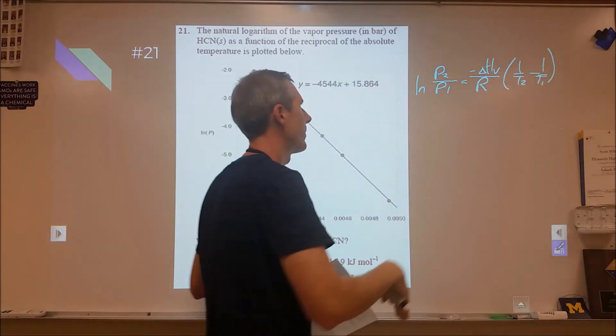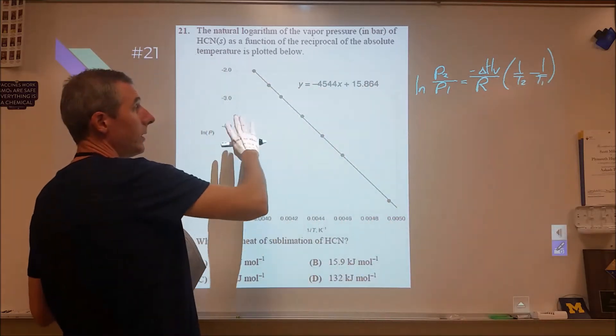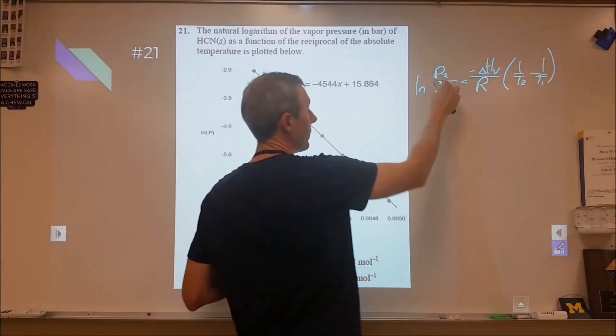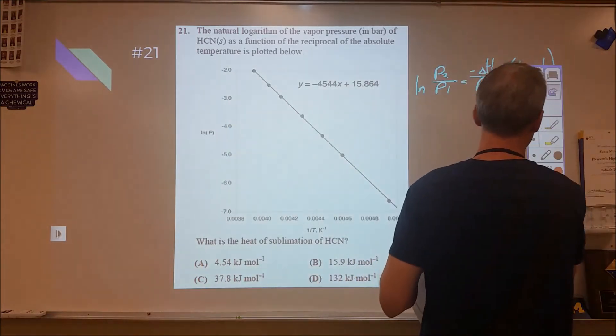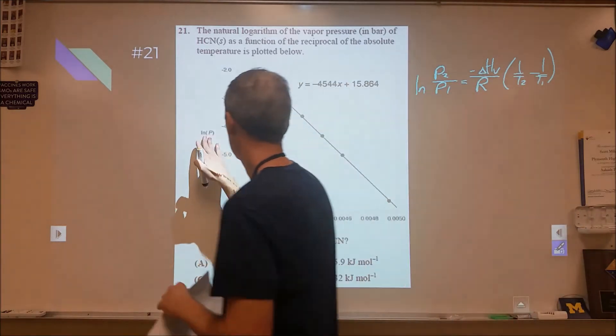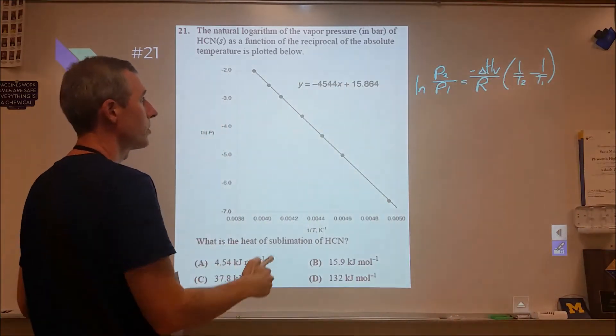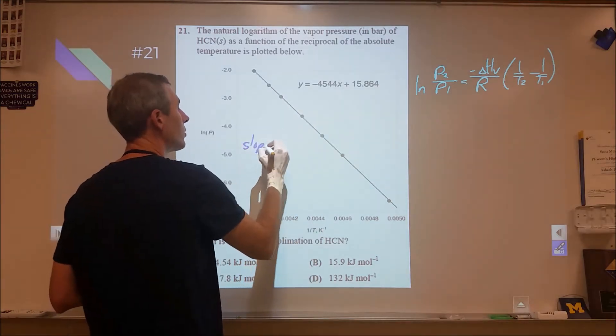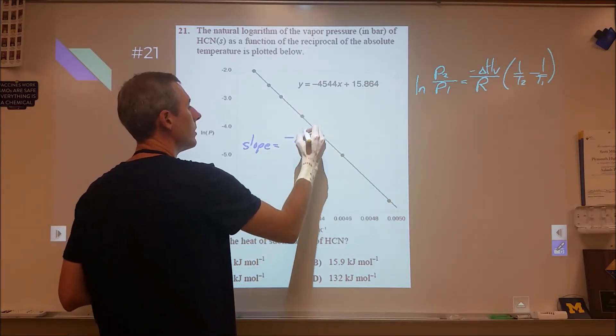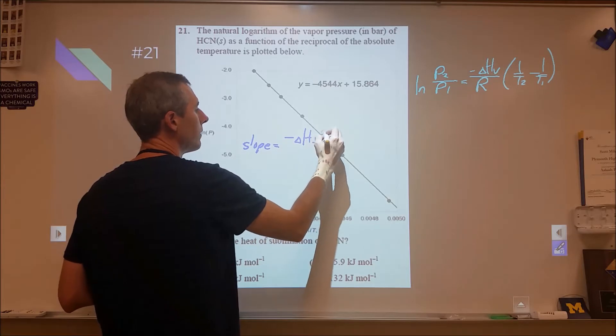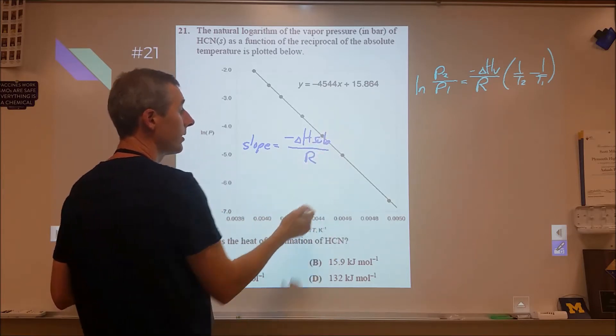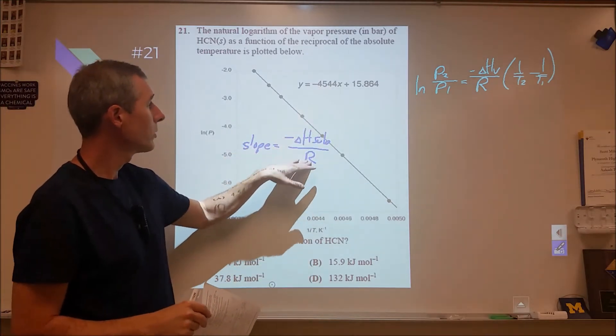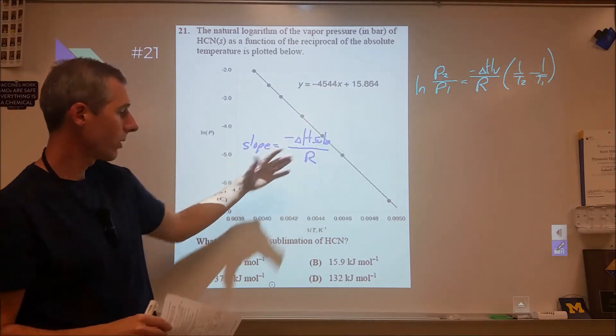I'm not sure if I flipped those around or not, but anyway the end result is that we can measure various vapor pressures at various temperatures in the lab, then construct a plot of natural log of vapor pressure versus one over temperature, and the slope of that line should be equal to enthalpy of sublimation over the ideal gas constant. When they give us y equals mx plus b, all we have to do is multiply that by negative R, and that will give us our answer.